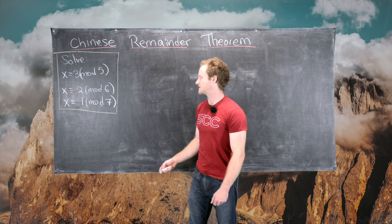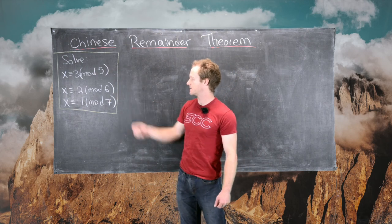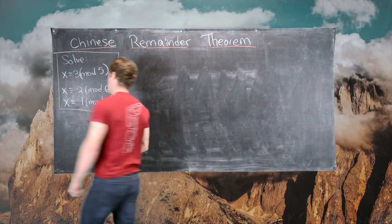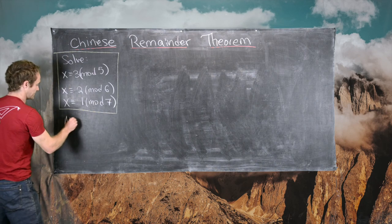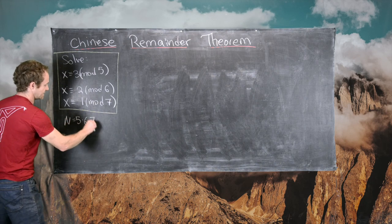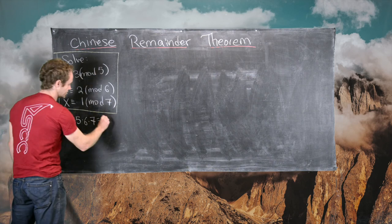So the first step is to calculate the product of 5, 7, and 6. So we have N equals 5 times 6 times 7, which is 210.